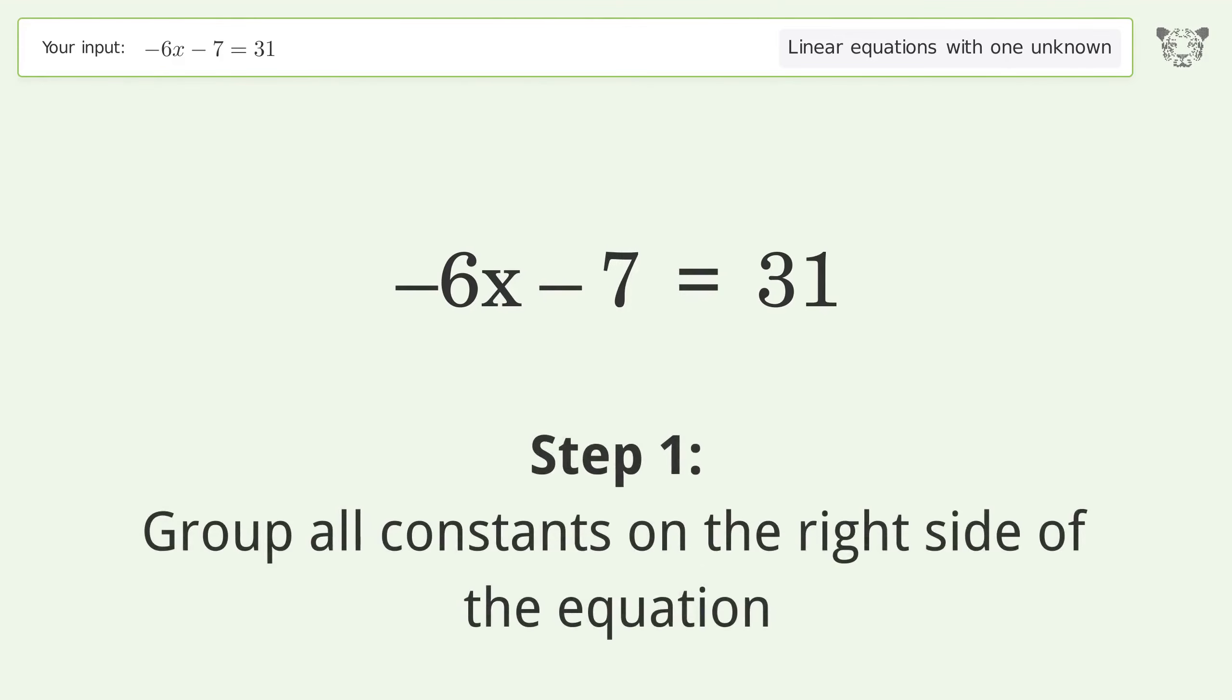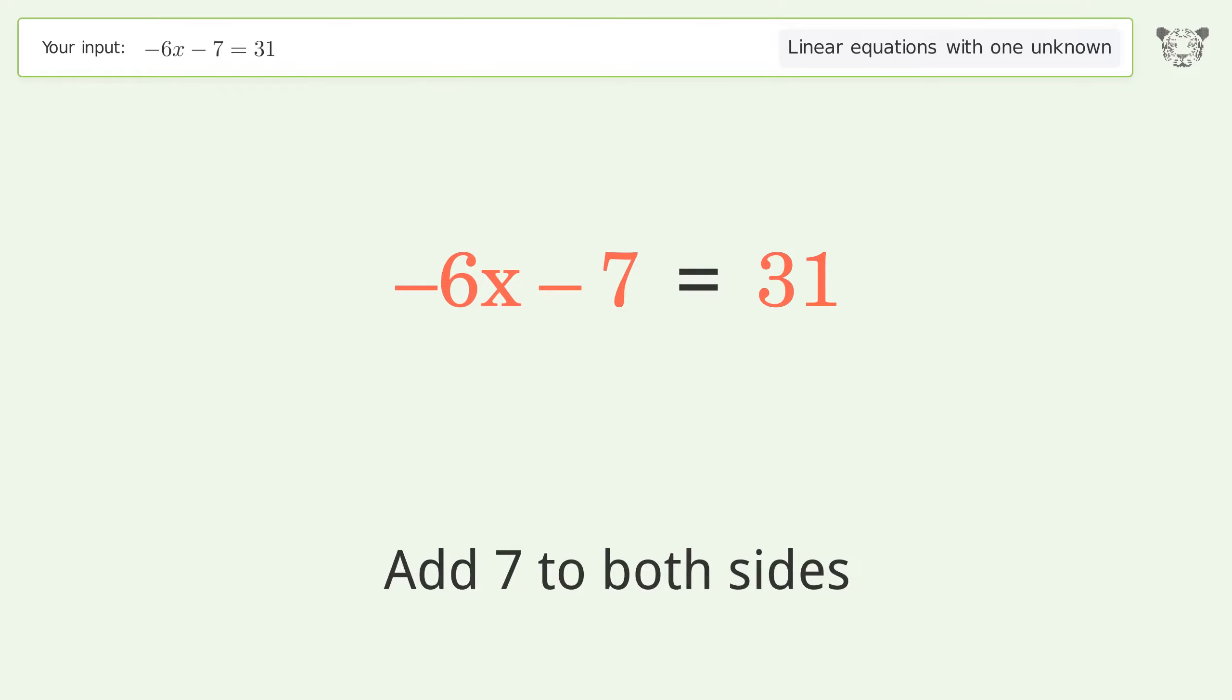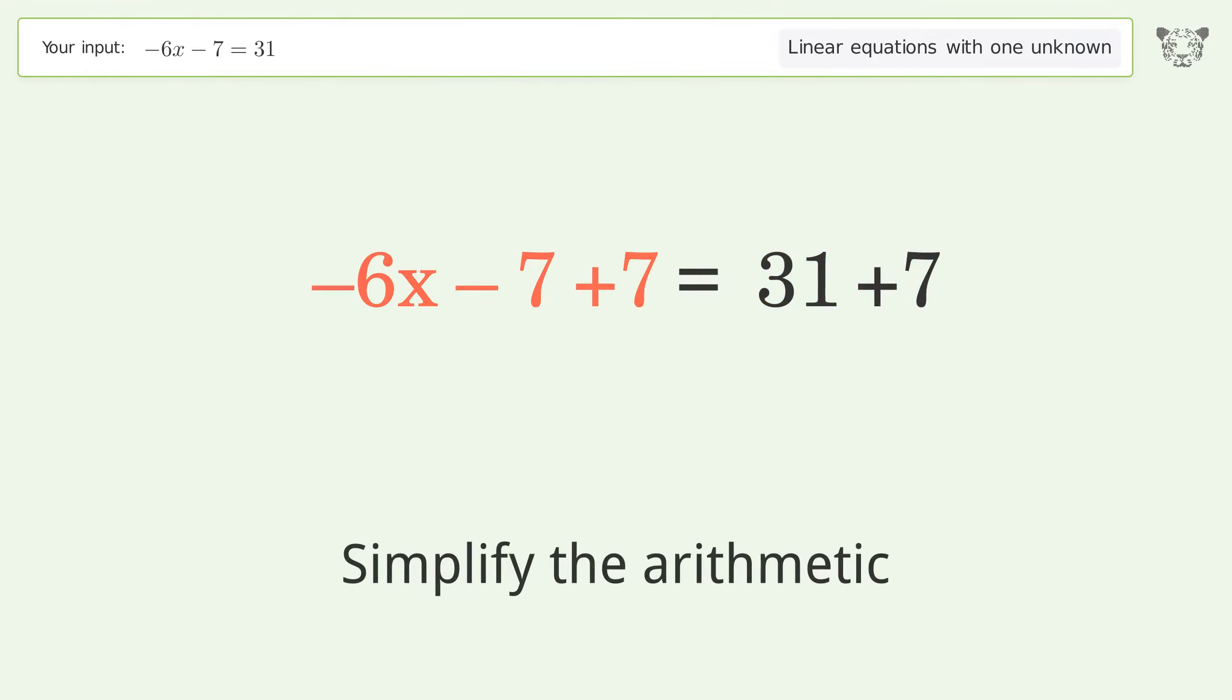Group all constants on the right side of the equation. Add 7 to both sides. Simplify the arithmetic.